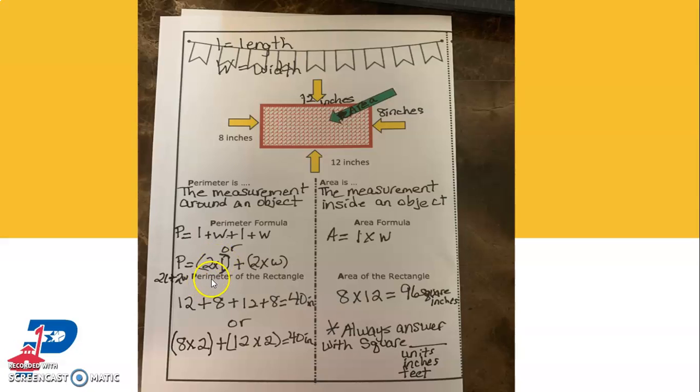And that, I wrote it like this because I wanted to, so you know that it's 2 times L plus 2 times W. 2 times length plus 2 times width. The way they have it written out on the chart is like this.